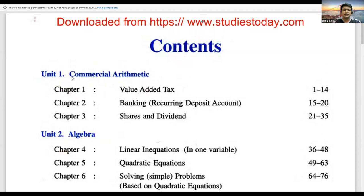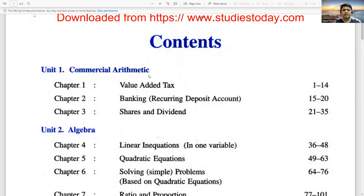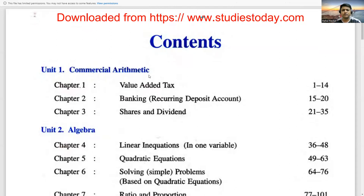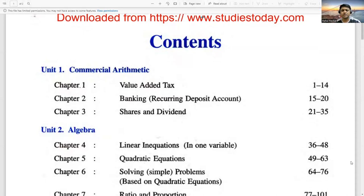First is Commercial Arithmetic. In that, Chapter 1 is VAT, that is Value Added Tax. Then Chapter 2 is a banking related chapter where we will see Recurring Deposit Accounts. Then Chapter 3 has Shares and Dividend. So these three chapters are under Unit 1, Commercial Arithmetic.